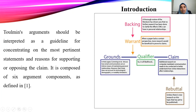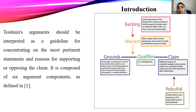Here, in this figure, we show an example of a warrant according to Toulmin's argument. Toulmin's argument should be understood as a guideline for concentrating on the most relevant statement and the reasons for supporting or opposing the claim. It is composed of six argument components, as shown in this figure.